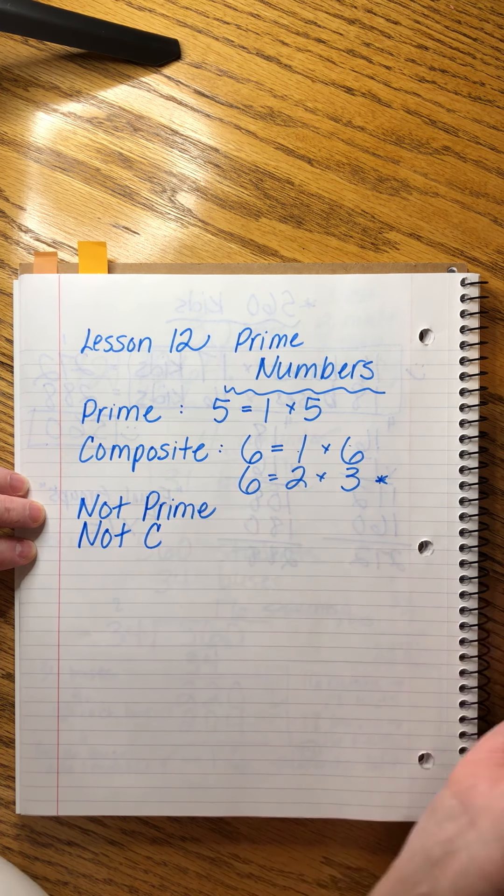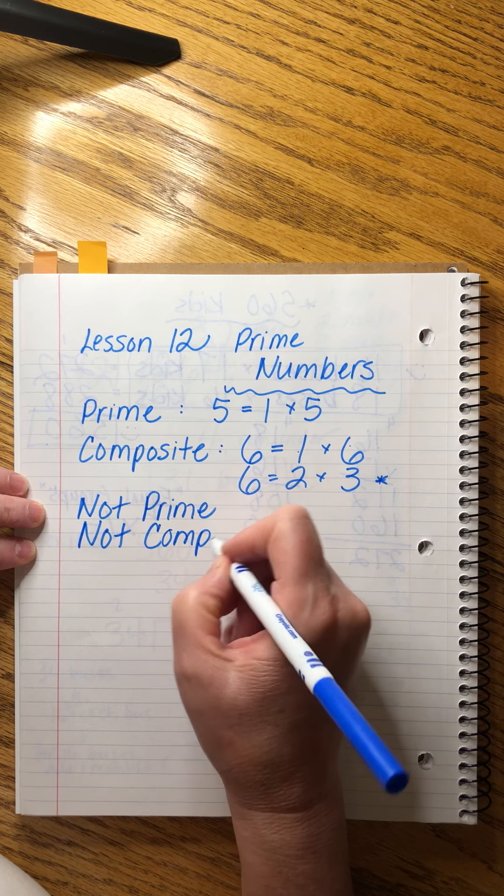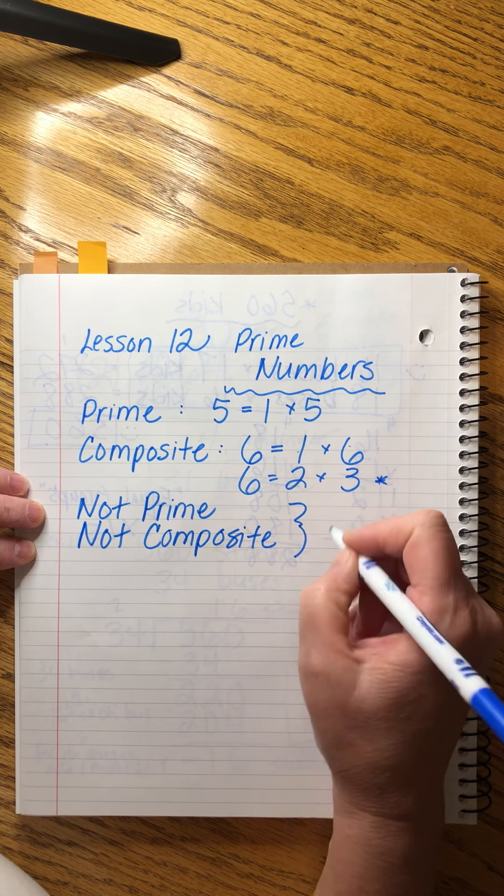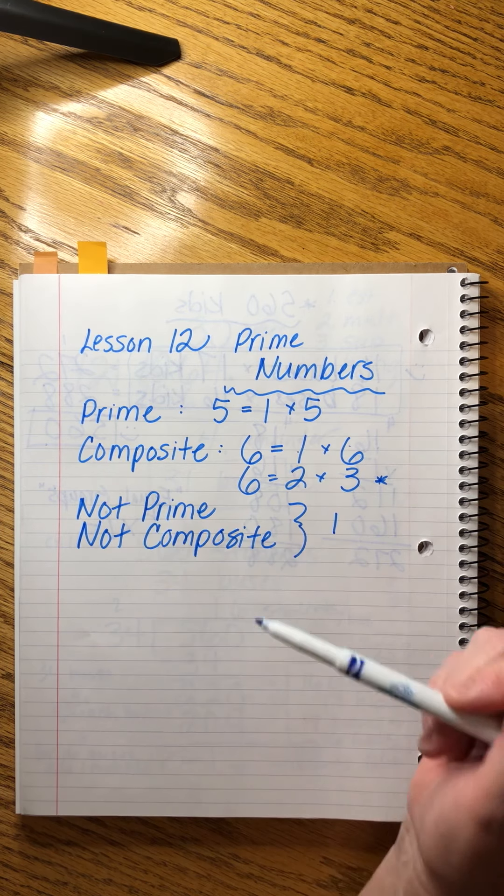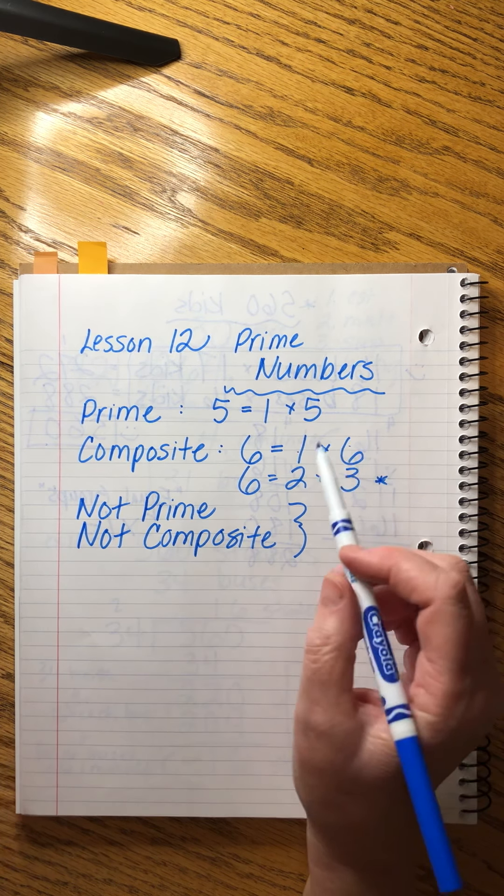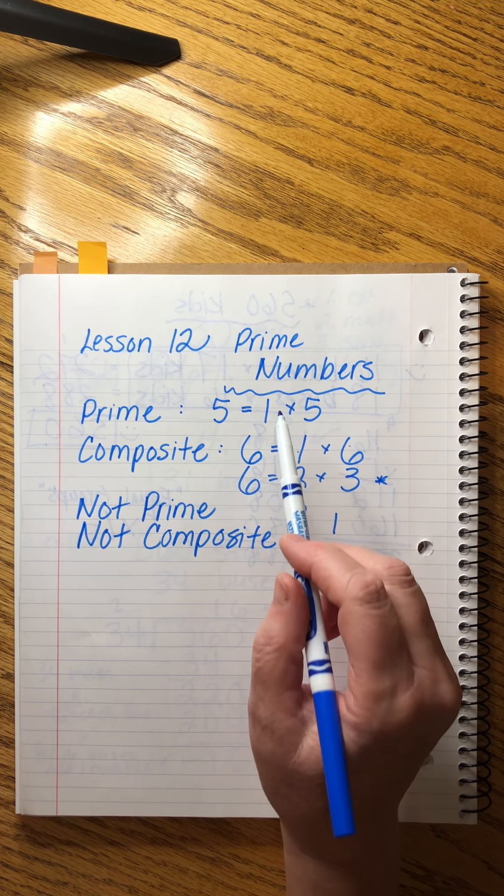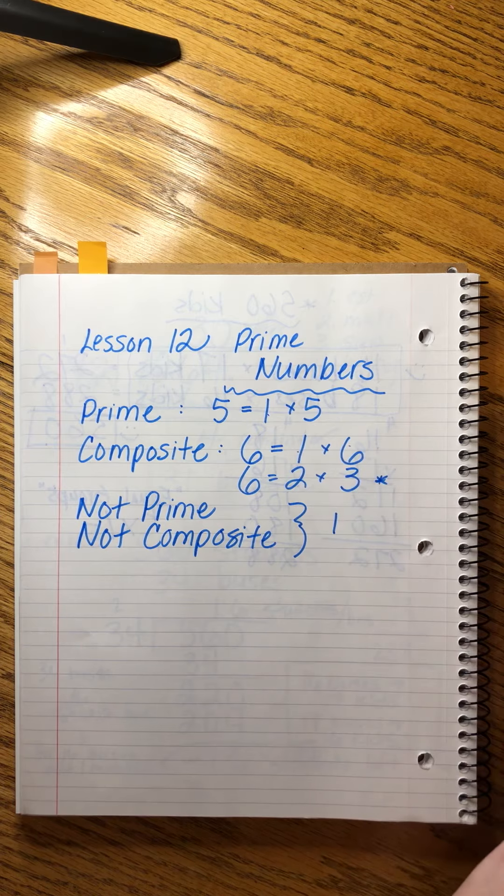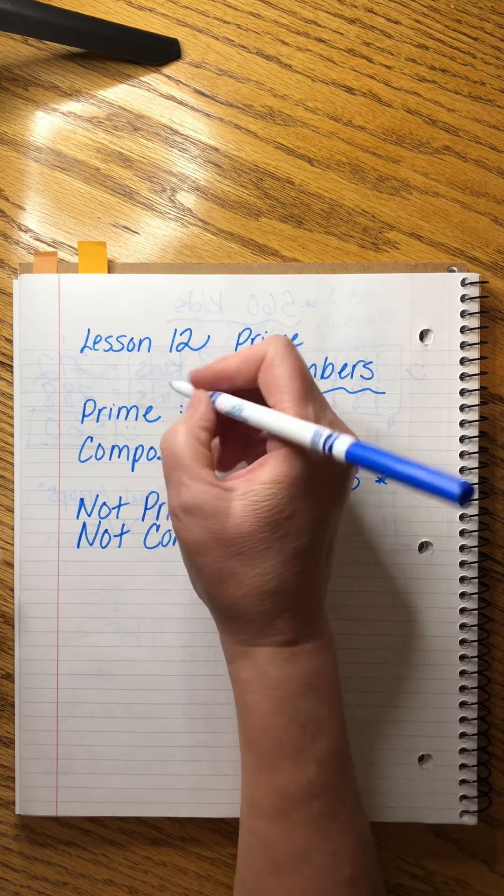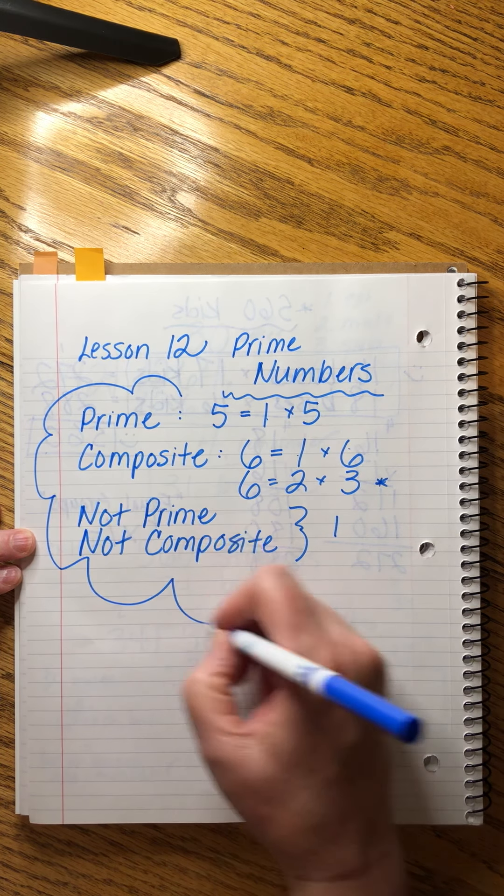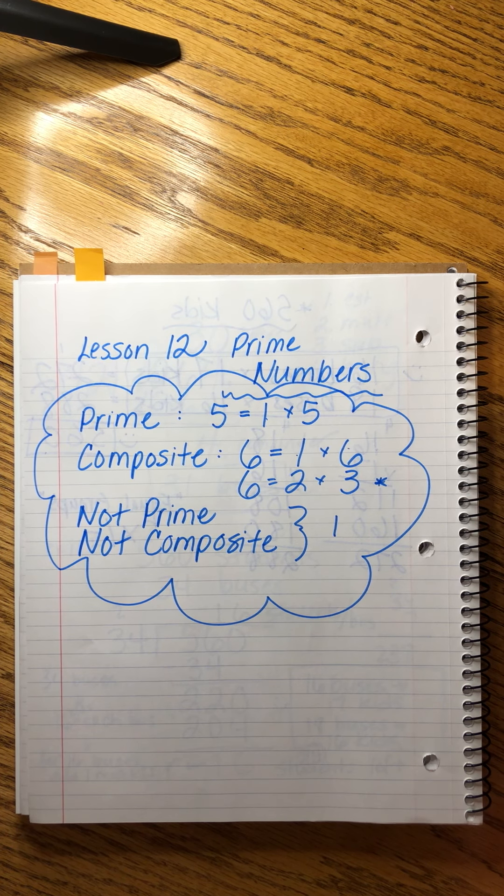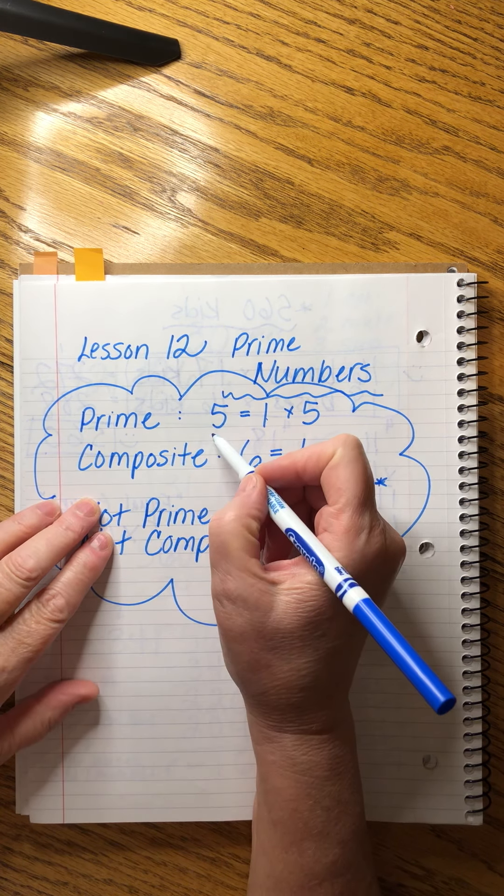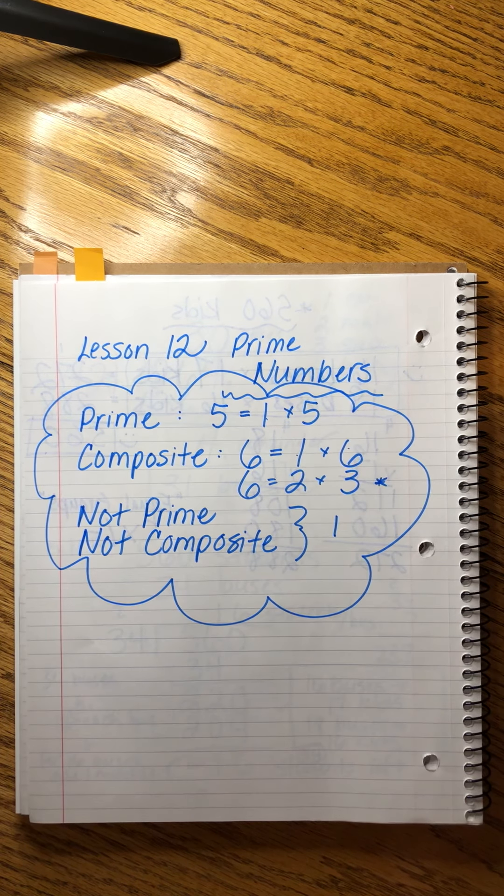One little wrinkle is the number one. It's neither prime nor composite, it's just a little freak child. One is not a prime number and not a composite number—remember that. A prime number is a whole number greater than one whose only whole number factors are one and the number itself. Five is a great example of a prime number and six is a great example of a composite.